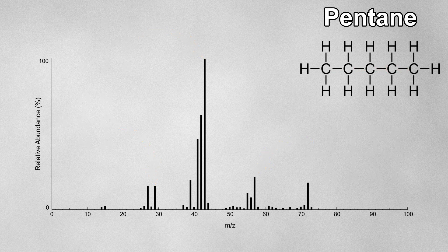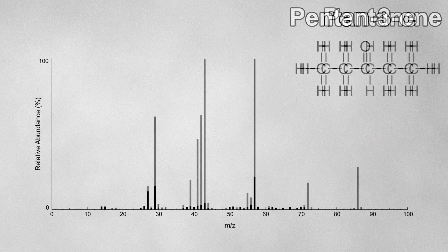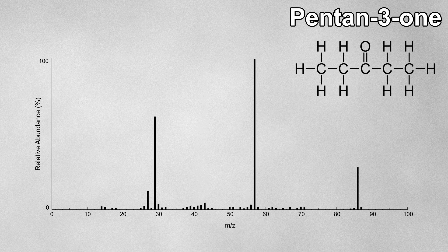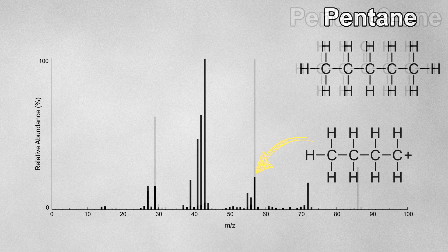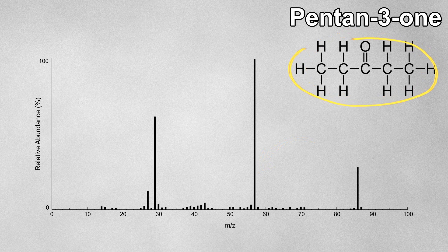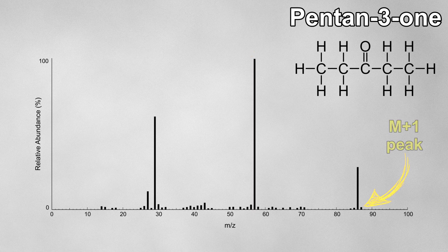Let's look at the electron impact mass spectrum of pentantrione. We can see that this molecule has an M+ peak at 86, telling us its molecular mass, and it has fragmented differently compared to pentane. However, it has a couple of the same peaks — one at 29 and another at 57. Just like before, the peak at 29 is due to the ethyl cation. With pentane the peak at 57 was due to a butyl cation, but if we look at the structure of pentantrione, there's actually no way to fragment the molecule to give a butyl cation, so this peak is caused by a different fragment instead. Let's now talk about that small peak beyond the M+ peak — the M+1 peak.